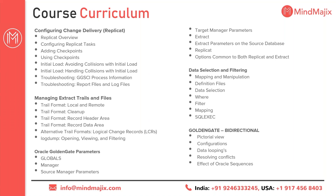The next chapter is Oracle GoldenGate Parameters. GoldenGate replication depends purely on how we use the parameters. Just like Oracle Database has its own parameters, GoldenGate also has its own parameters — for example, to connect to Oracle Database from GoldenGate, you need to use specific parameters. There are plenty of parameters available, and based on the need we can make use of each one. The next chapter is Data Selection and Filtering.